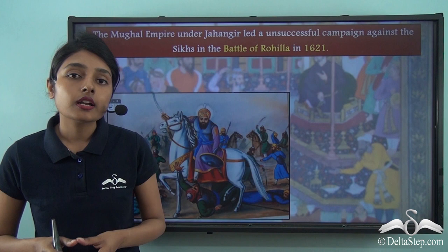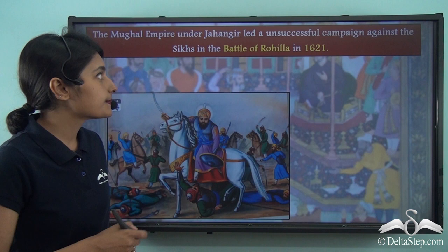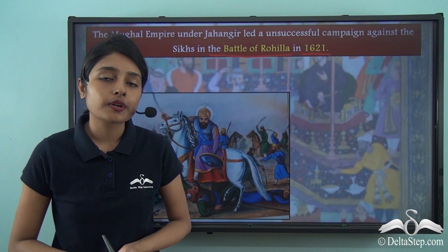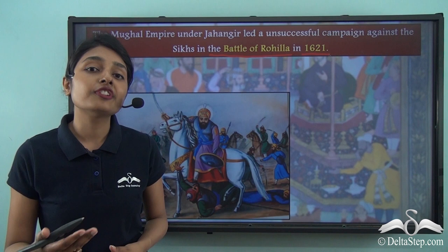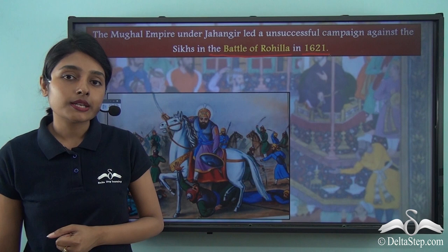The Mughal Empire under Jahangir sought to suppress the Sikhs and launched a new campaign against them. The Sikhs met the Mughal troops in the Battle of Rohila in 1621. The Sikhs, being a powerful and valiant — almost militant — group, crushed the Mughal invasion and the Mughal troops had to flee from the battlefield. This campaign ended in victory for the Sikhs.